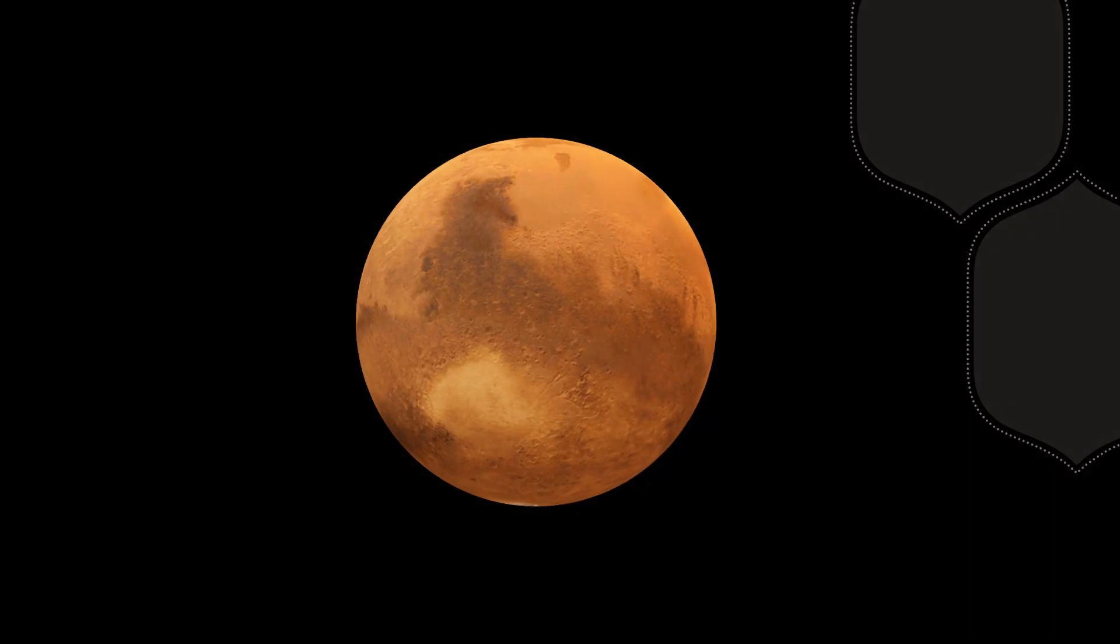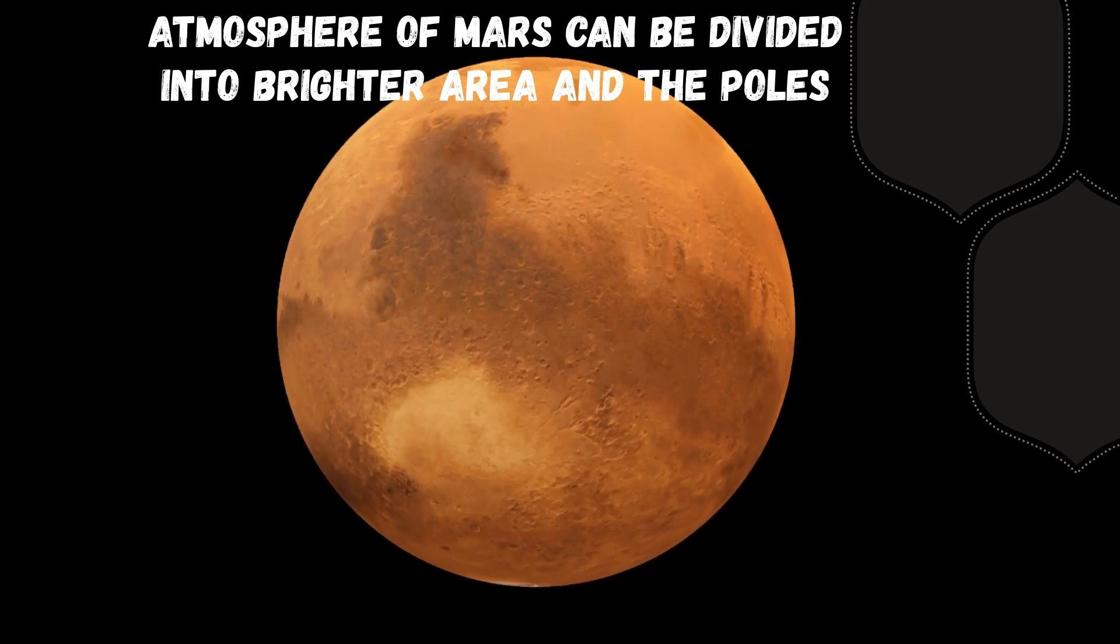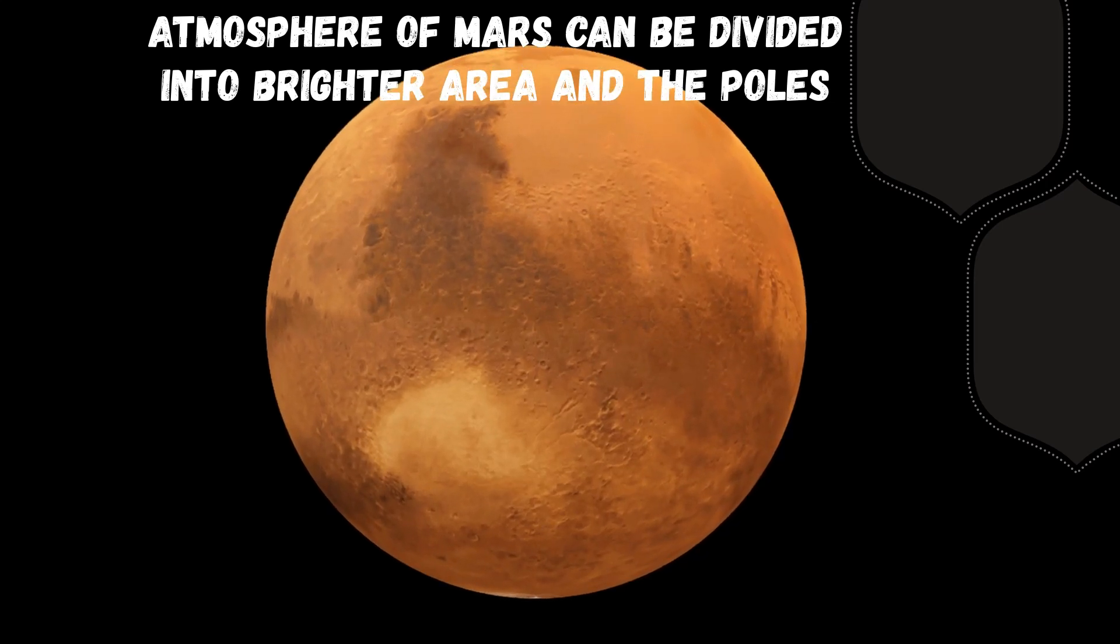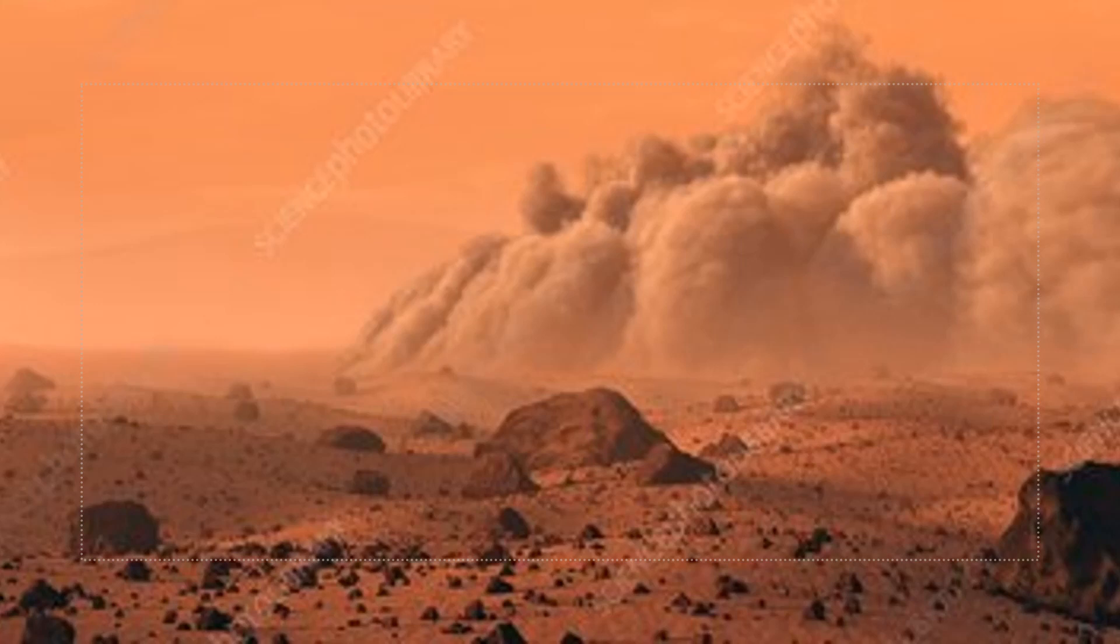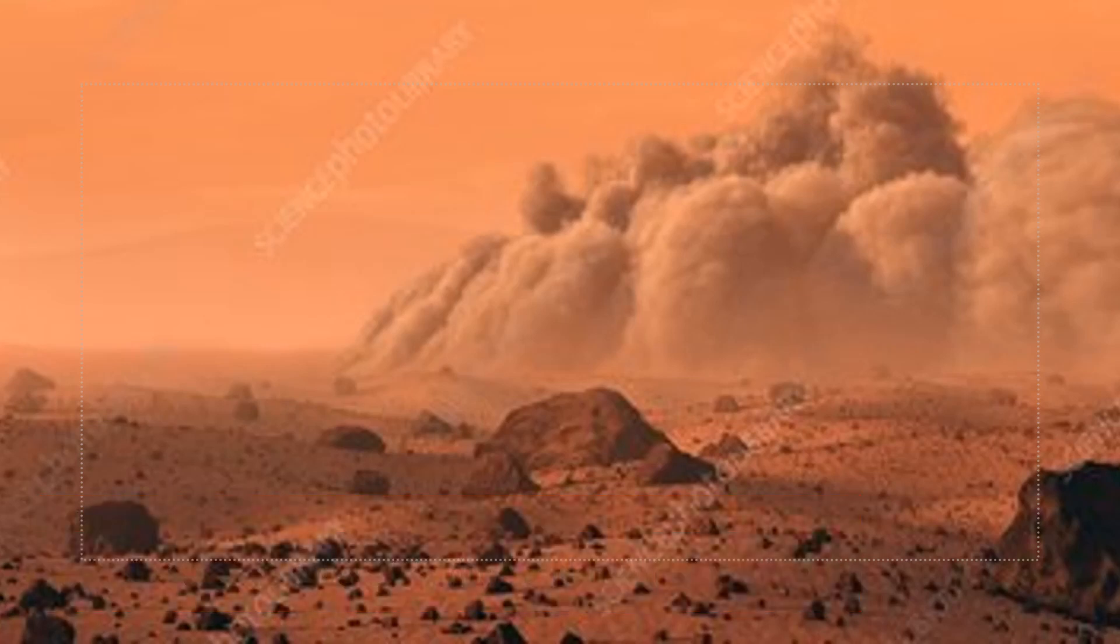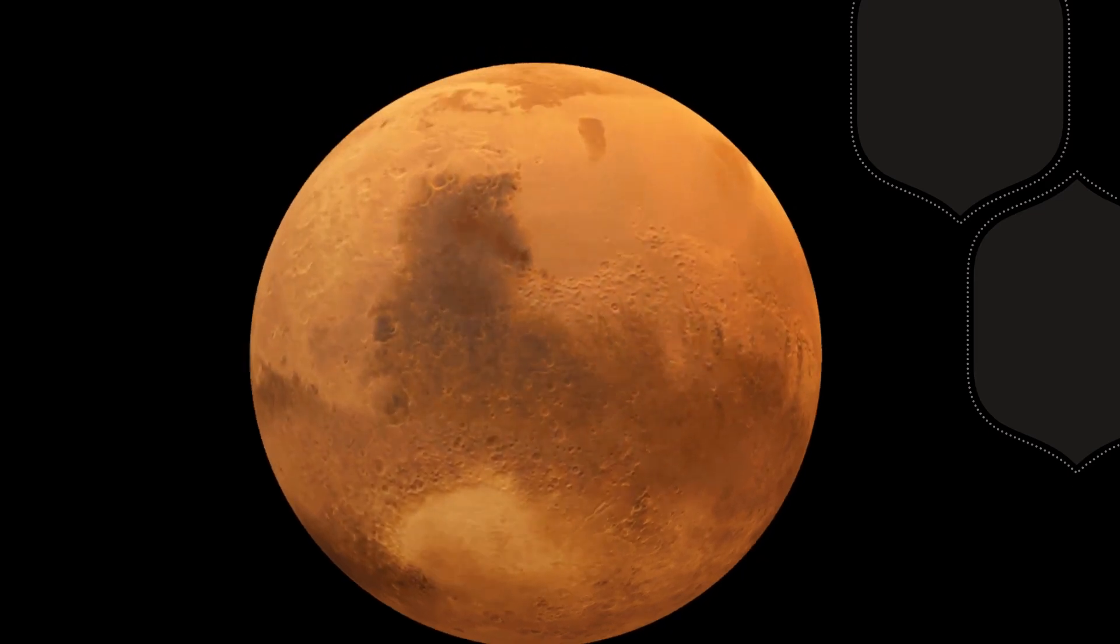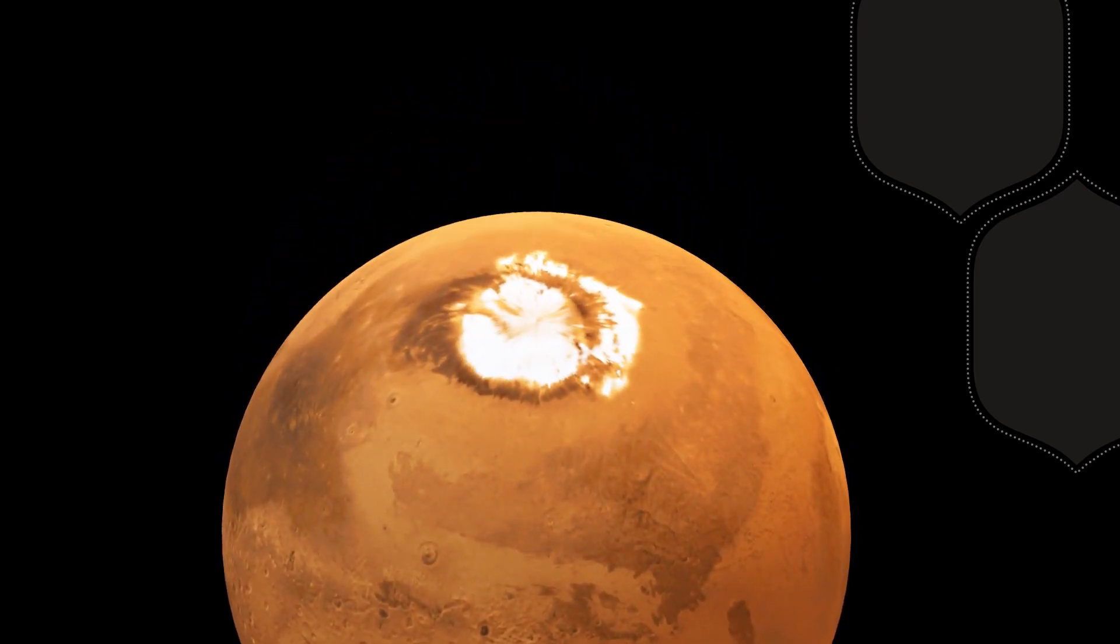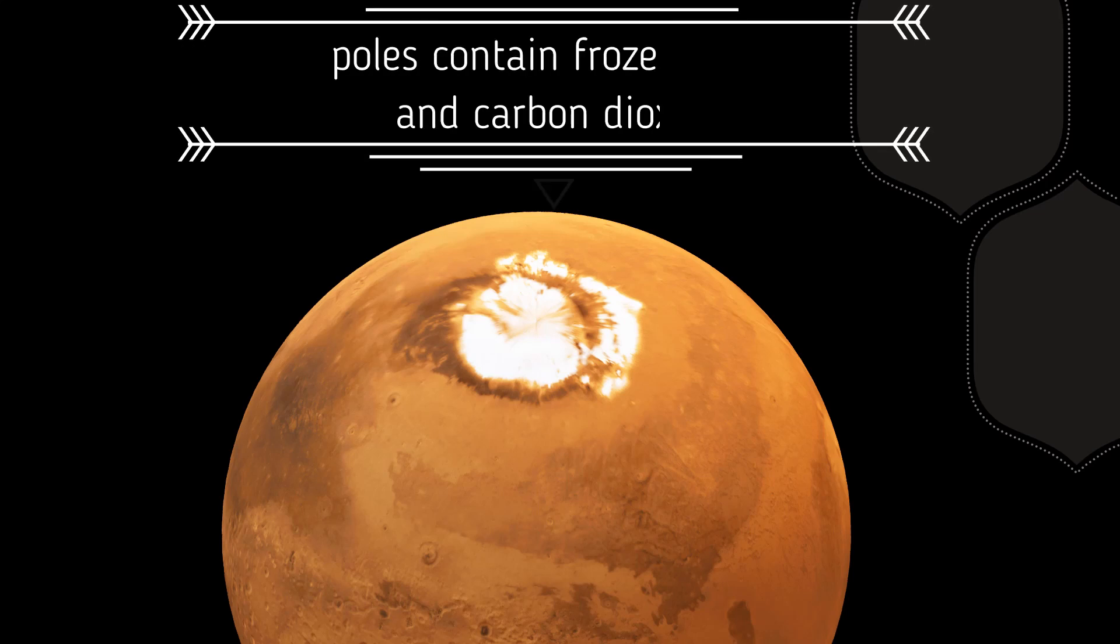If we see from Earth, the atmosphere of Mars can be divided into two different areas: the brighter area and the poles. The brighter area is covered in dust and reddish sand. The poles contain frozen water and carbon dioxide.